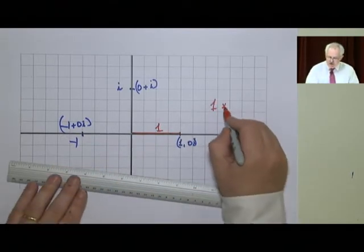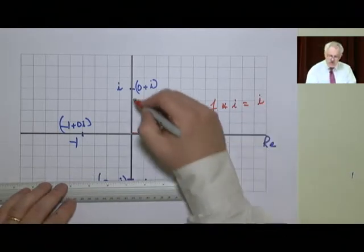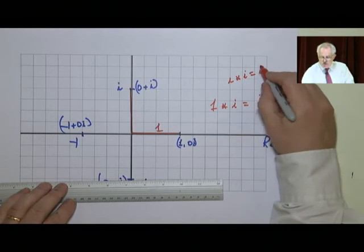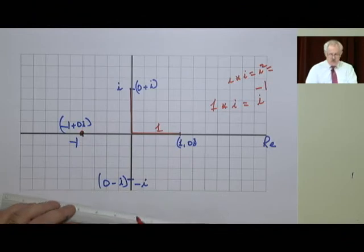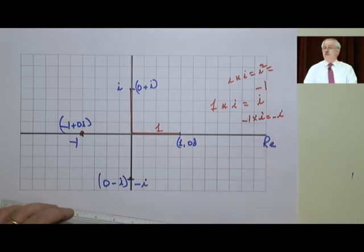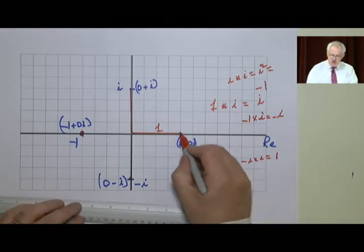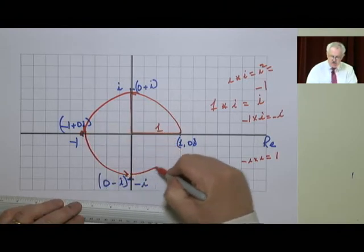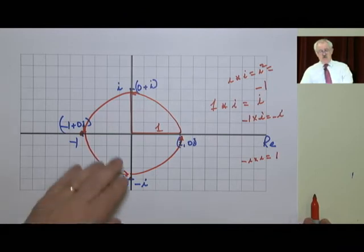And I multiply 1 times i. What do you get if you multiply 1 times i? i. You get this. What happens if you do i by i? i squared. And what's i squared? Minus 1. That's over here, isn't it? What happens if you do it again? Minus 1 by i? Minus i. And minus i by i would give us 1. In other words, every time I multiply by i, I'm rotating through 90 degrees.